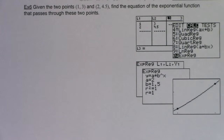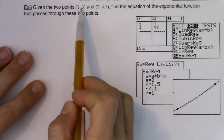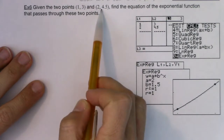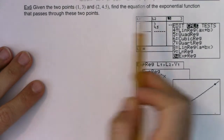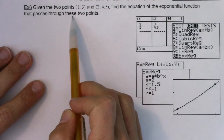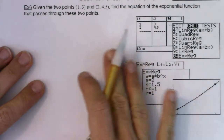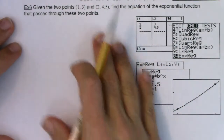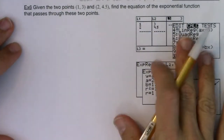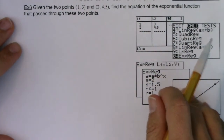Hey, Math 31. We're back trying to find some exponential models. So in example 6, I'm given two points: (1, 3) and (2, 4.5). And we want to find the equation of the exponential function that passes through these points. Much like example 5, I'm going to do it by hand first, and then flip over to my computer and show you how to do it on your calculator.